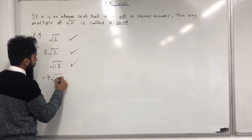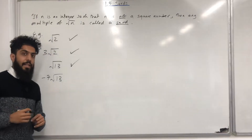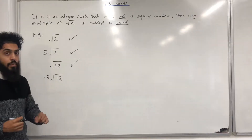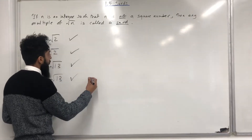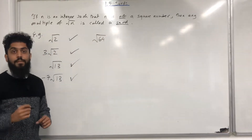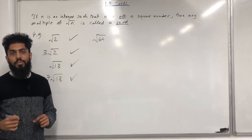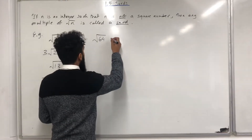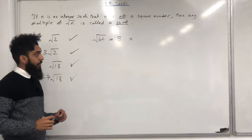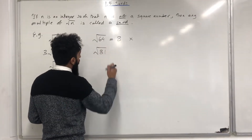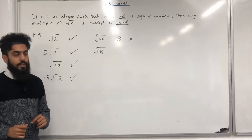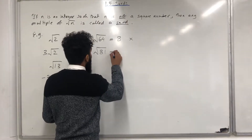Minus 7 square root 13: we know that square root of 13 is a surd, and minus 7 square root of 13 is a multiple of square root 13, hence minus 7 square root of 13 is a surd. What about square root of 64? 64 is a square number, hence square root of 64 is not a surd — square root of 64 is equal to 8. Another example: square root of 81. 81 is a square number, hence square root of 81 is not a surd — square root of 81 is equal to 9.